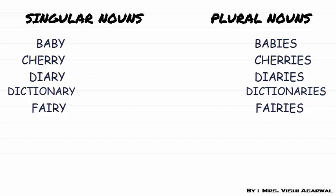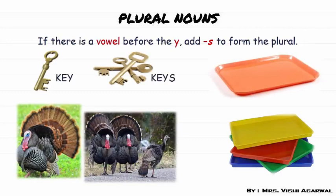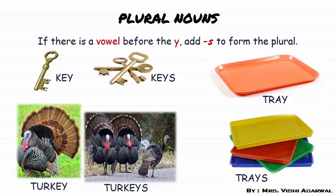In all these words, in the singular column, you can see that the word is ending with Y, and in the plural we change Y into I and then add ES. Now if there is a vowel given before the letter Y in a word, then we will add only S to make it plural. For example: key becomes keys, tray becomes trays, turkey becomes turkeys.